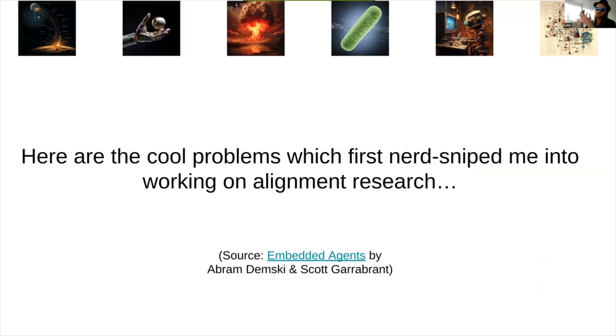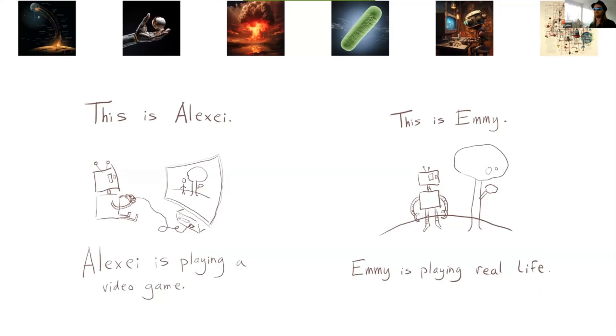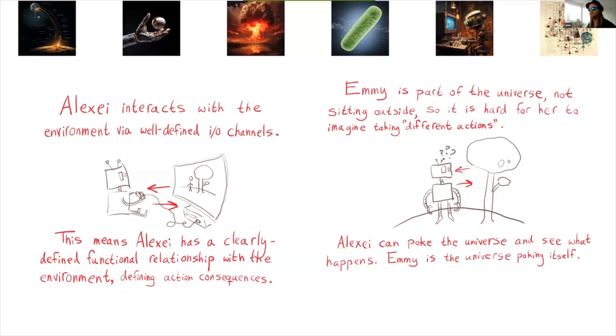Moving on. Different angle on all this. Here are some other cool problems. These are some of the problems that first nerd sniped me into working on alignment research. These are from embedded agents. You can look it up online. It's a very entertaining read. On the left, we have Alexei. Alexei is a robot playing a video game. On the right, we have Emi. Emi is a robot playing the game of real life. Some notable differences between these two. Alexei has well-defined input-output channels. That means the video game has a clearly defined functional relationship to Alexei. Like, if he puts in these actions, here's what will come out. Emi doesn't have that. For a robot embedded in the environment, it's hard to imagine what would happen if it took different actions, because it's just a chunk of the environment. Alexei can sort of poke the game and see what happens, whereas Emi is sort of the universe poking itself.